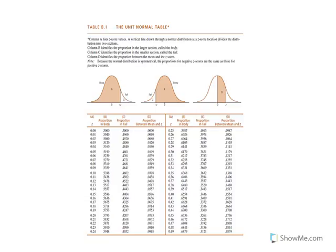The area of interest represents the body of the distribution for a negative z-score. We want to find z equal to negative 0.50. Note that the unit normal table in Appendix B only includes positive z-scores — there's no need for a separate negative table because the distribution is symmetrical. Whatever distance we see on the positive side is equal on the negative side. So we look for 0.50 rather than negative 0.50, entering the table using column A.